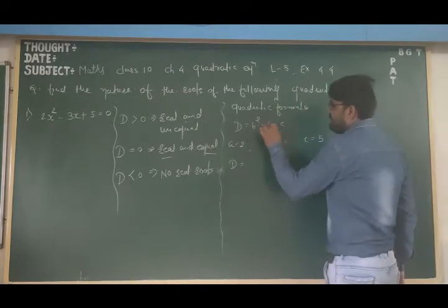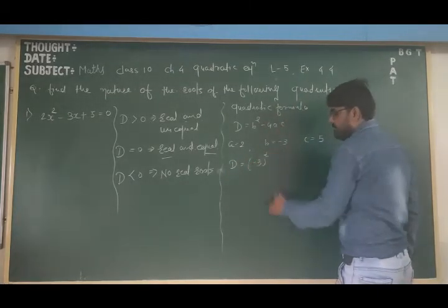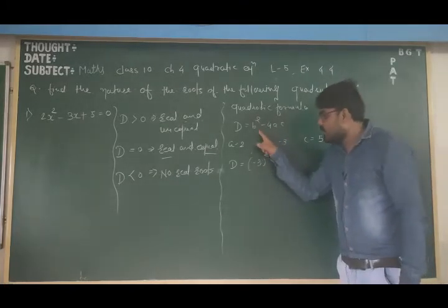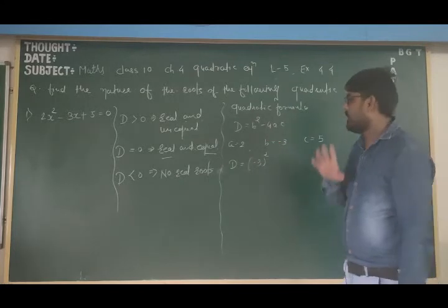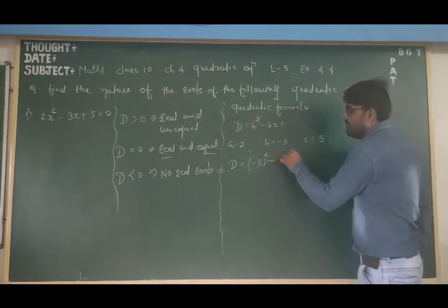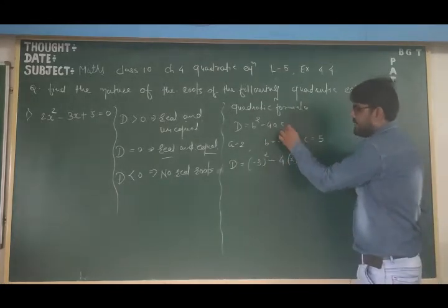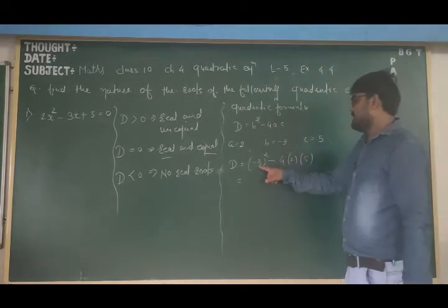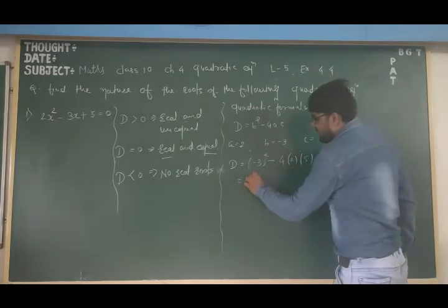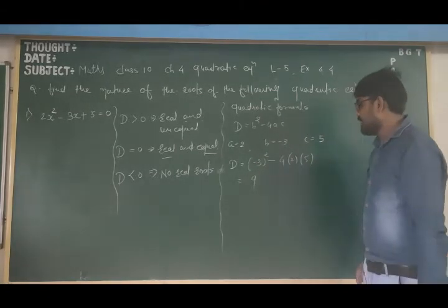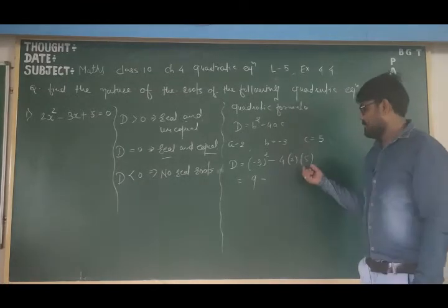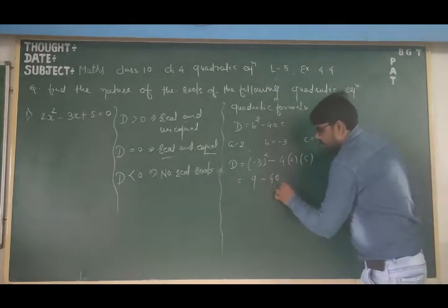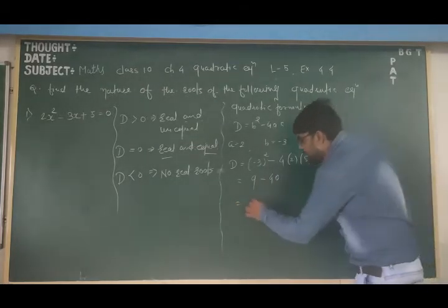So D equals b squared minus 4ac. D equals (minus 3)² minus 4 times 2 times 5. Now, (minus 3) whole squared equals 9. And 4 times 2 times 5 equals 40. So D equals 9 minus 40, which gives D equals minus 31.